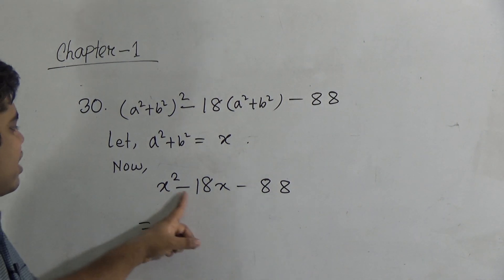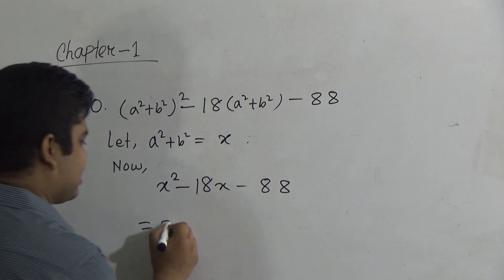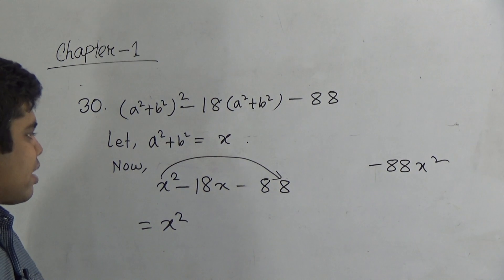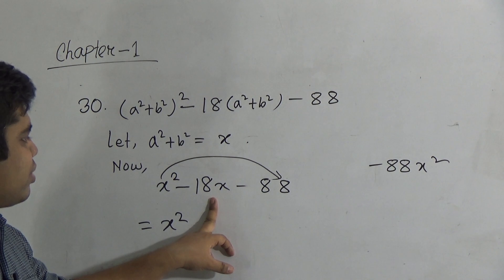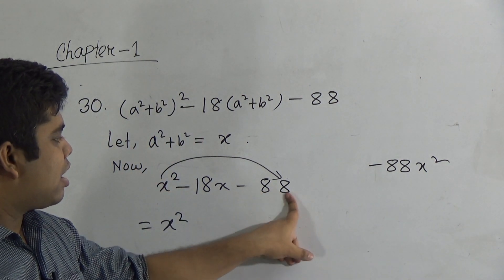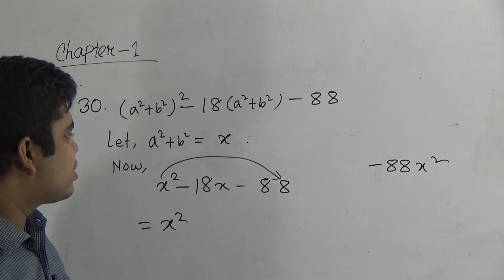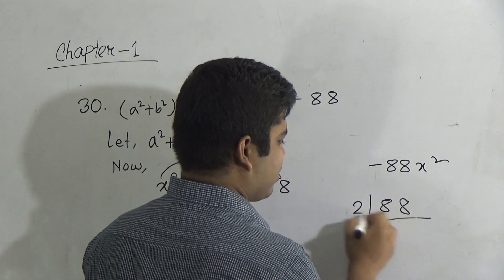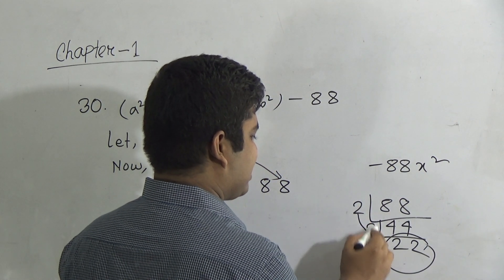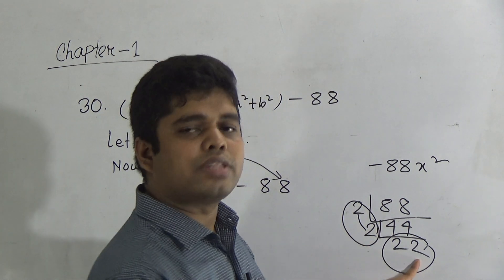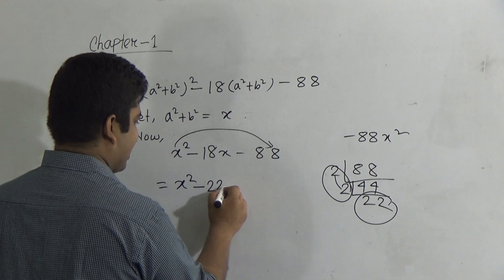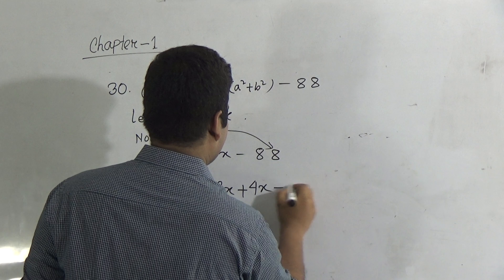Now we have x² minus 18x minus 88. We multiply the first and last terms: x² times minus 88 gives minus 88x². We break the middle term such that their subtraction will be 18x and their multiplication will be minus 88x². We use subtraction because the constant term carries a negative sign. We find 88 divided by 2 gives 44, and 44 divided by 2 gives 22. Notice that 22 minus 4 equals 18, so we write minus 22x plus 4x.